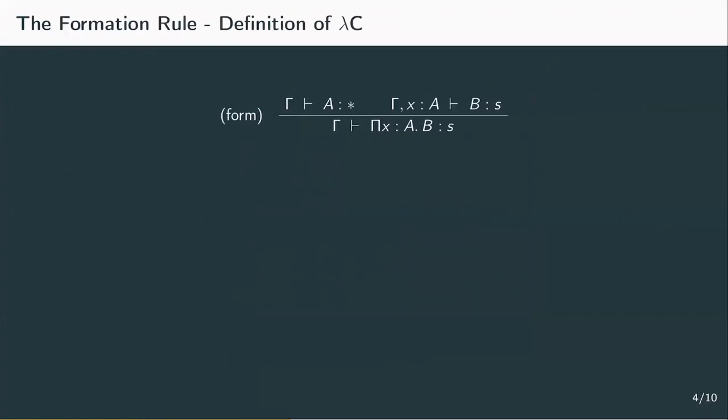Remember that in lambda P, it was important that the A in the first premise is a type, and for x in the abstraction to be a term. Lifting this restriction allows A to be a kind, and therefore x of kind A to be a type. This gives us abstraction over types. So we switch this star for s to allow both star and box.